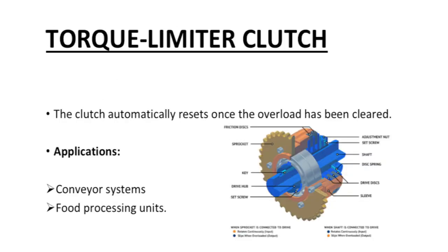Torque limiter clutch: the clutch automatically resets once the overload has been cleared. Application: used on conveyor systems and food processing units.